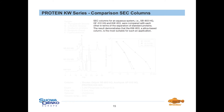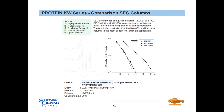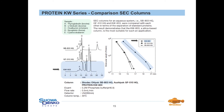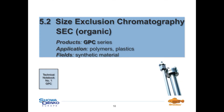Another important fact when choosing a column for size exclusion chromatography is to consider the base materials used for the stationary phases. In the case of proteins, a silica-based column is usually the better choice, as it shows a more flattened calibration curve, which leads to significantly better separation than polymer-based columns like SB-803 and GF-510. For synthetic materials which are insoluble under aqueous conditions, size exclusion chromatography with organic solvents has to be applied — this method is also known as gel permeation chromatography. If you need further information about applications and properties of our products in this area, please take a look at our technical notebook number one.